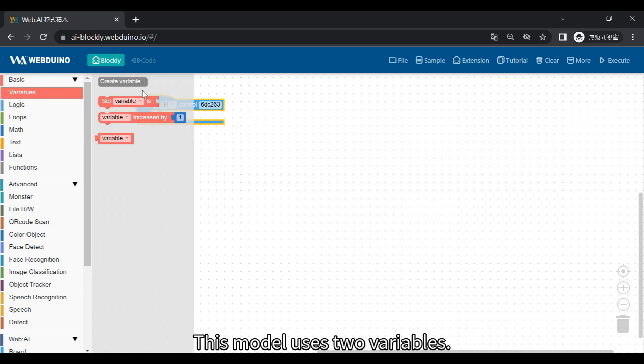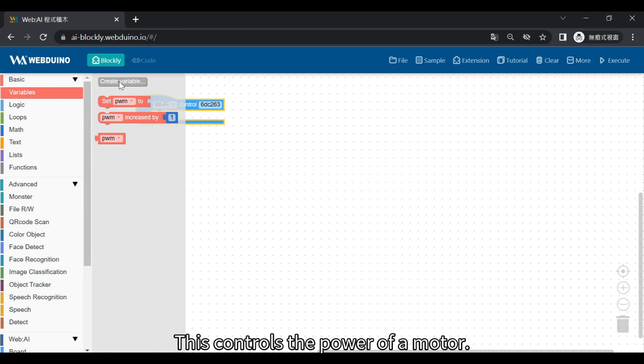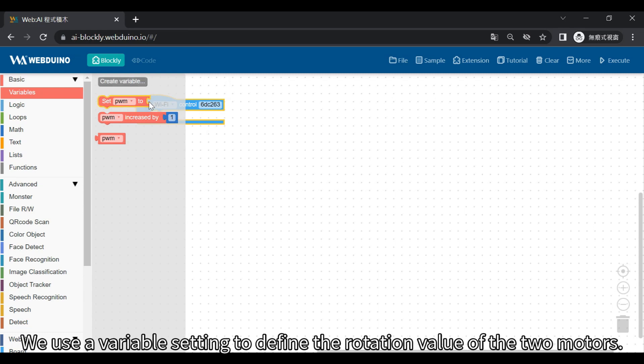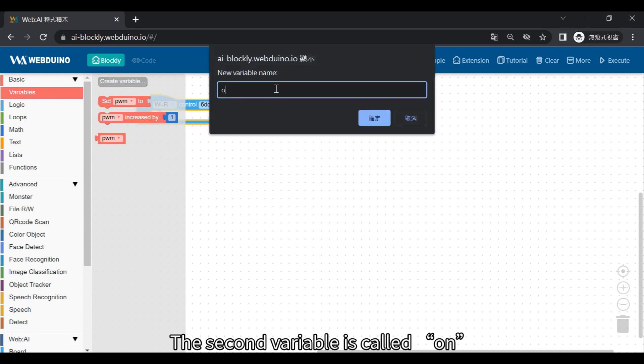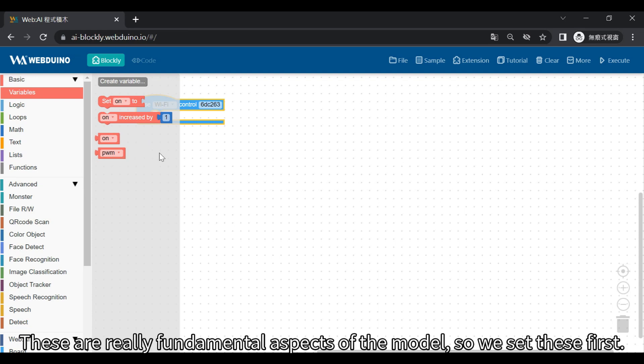Let's take a look at the variables first. This model uses two variables. Let's create the first one. The name of the first variable is PWM. This controls the power of a motor. We use a variable setting to define the rotation value of the two motors. The second variable is called ON, which is used to govern the power to the tram. We can set this using 0 and 1. These are really fundamental aspects of the model, so we set these first.